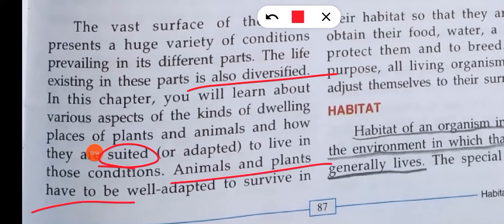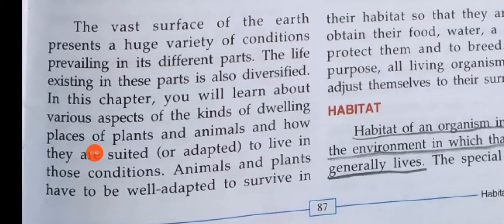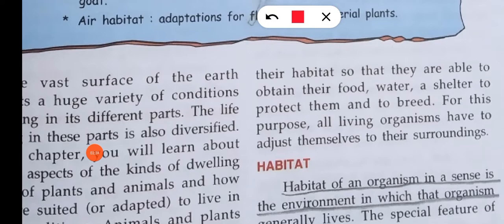Animals and plants have to be well adapted to survive in their habitat. Whether it is a plant, an animal, or a human being — we are also in the animal category — we can only survive in a place if we have properly adapted to its habitat. If you have adapted, you can live there properly. Every living organism has to adjust itself to its surrounding climatic conditions.